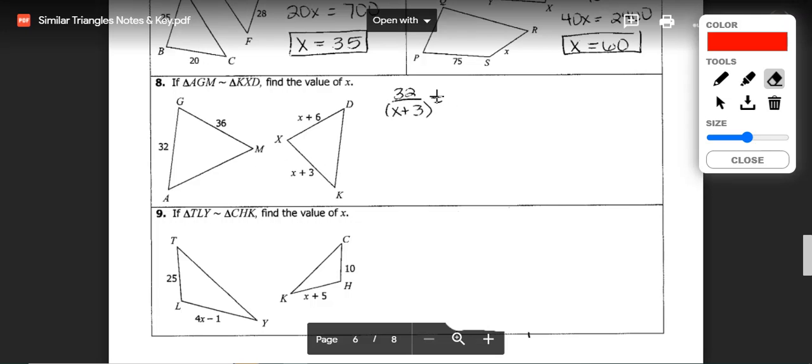We're going to take side 32 which is GA and that would correspond with XK or X plus 3. And that is going to have to be equal to 36, which corresponds GM with XD, X plus 6. So when we cross multiply, we're going to end up with 32 times X plus 6 and 36 times X plus 3.